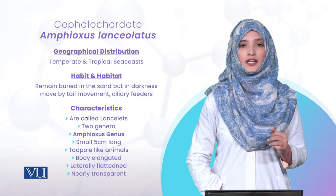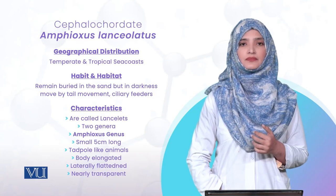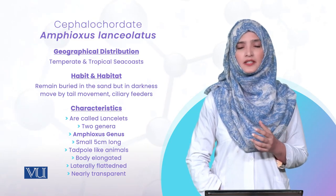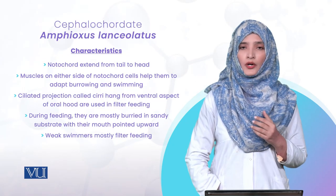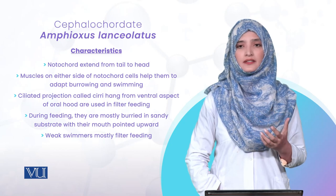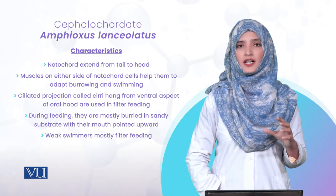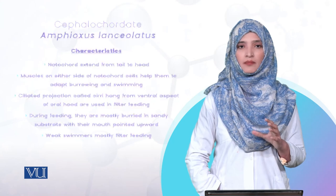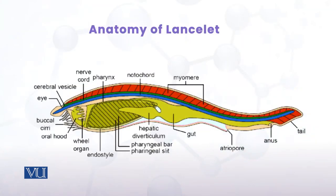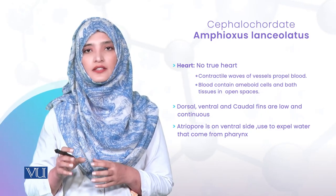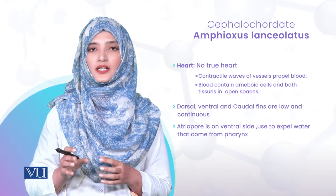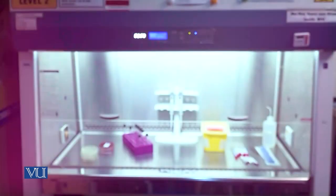Cephalochordates are found in a marine environment and are almost completely transparent with pointed heads and pointed ends. They have a fish-like structure but are not fishes. If we talk about the heart, there is no true heart, but there is a vessel system in the body containing amoebocyte cells that travel to different tissues and carry out gaseous exchange.